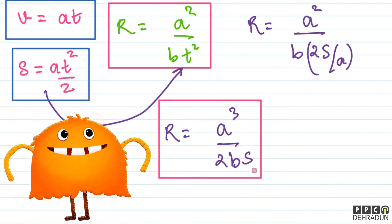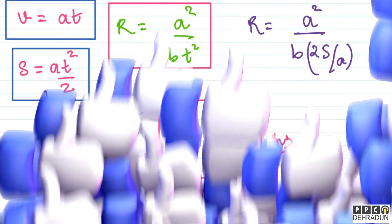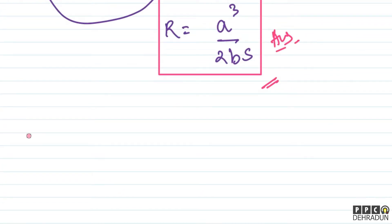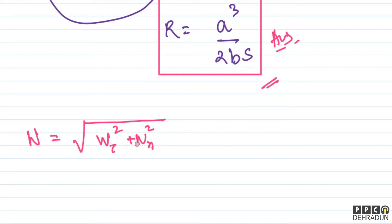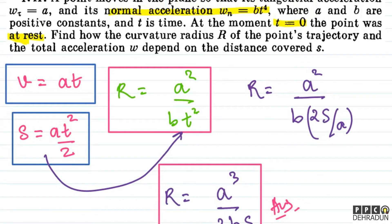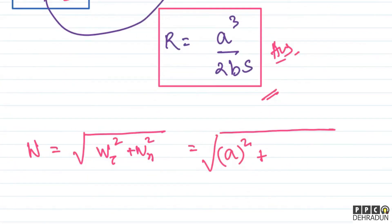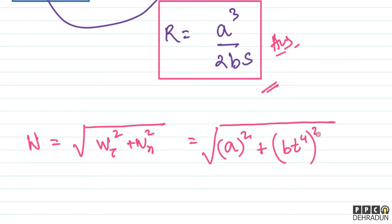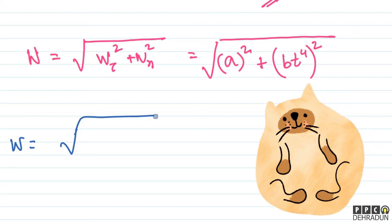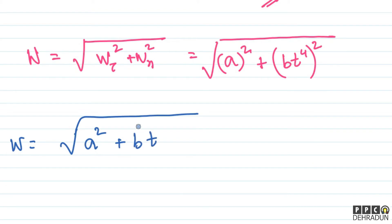This is our answer for curvature radius as a function of distance covered. Now the second part — we need to find total acceleration w as a function of distance covered. Total acceleration w = √(w_τ² + w_n²), because the two components are perpendicular to each other. Substituting values: w_τ = a (constant), and w_n = bt⁴, so w = √(a² + b²t⁸).